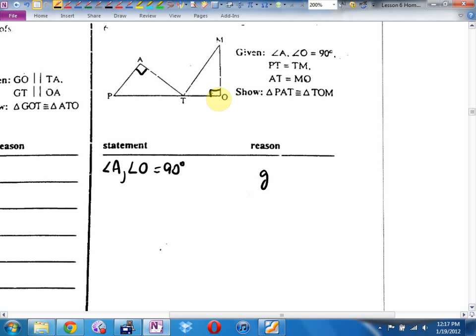Danielle, can you read the next given to me, please? PT, double hash mark, equals TM, double hash mark. Oh, now I have side, which may come in handy. Adam, what's the next given? A, T, equals M, O. Oh, I have side, side, angle. Or, oh, you know what? Right now, all I have is angle, side, side. Is that a congruency rule? Nope.